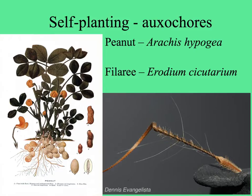Here are some self-planting plants — oxacores. On the left, the peanut: the flowers are borne above the ground and then the stalks produce the peanut underground, with the fruiting stalk called the peduncle. At the bottom is a single fruit of erodium, the filaree, which spirals and is hygroscopic and wiggles, working the fruit into the ground.